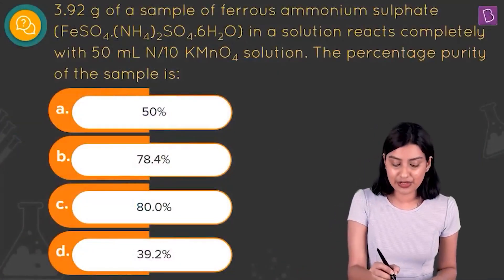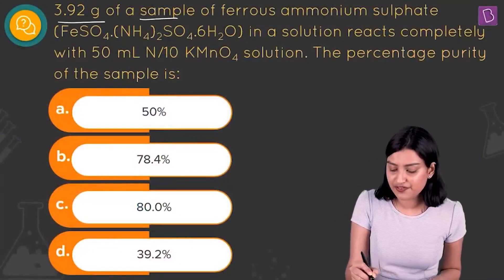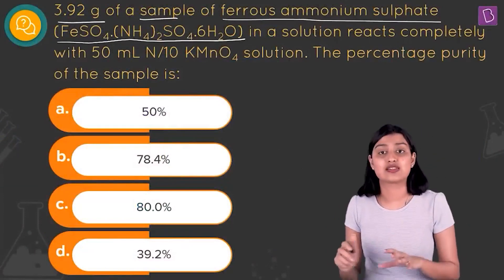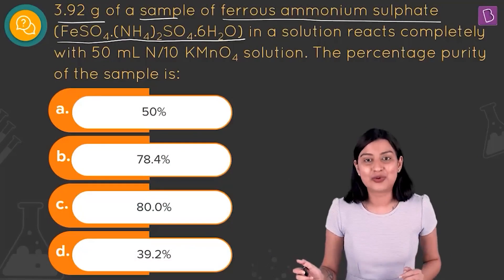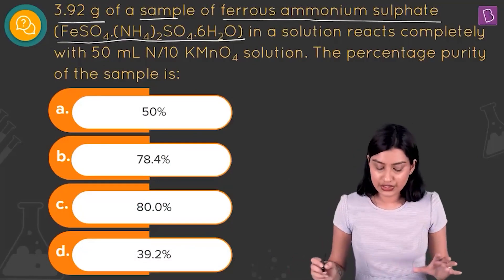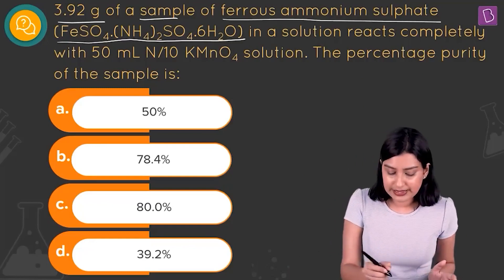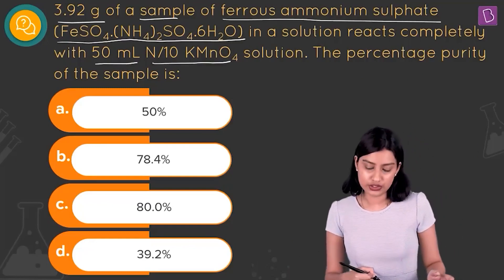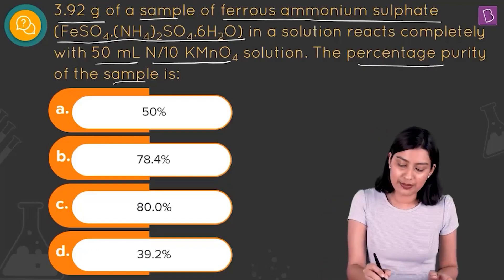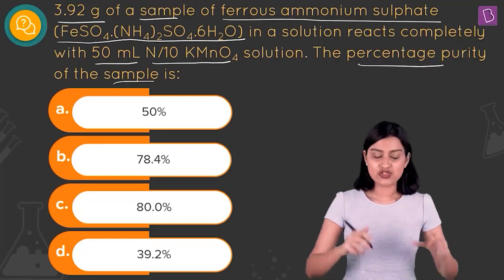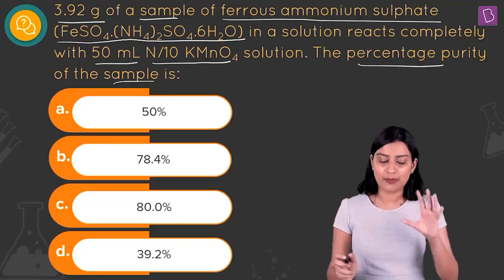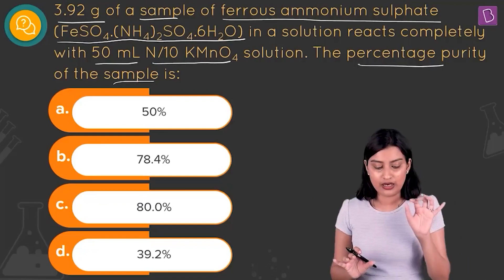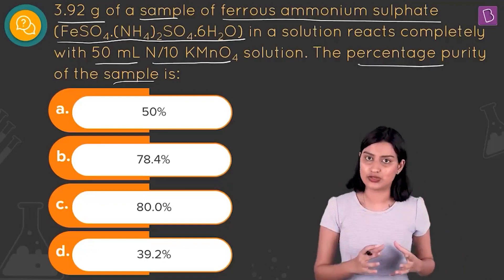Here they're saying you have 3.92 grams of a sample of ferrous ammonium sulfate — FeSO4·(NH4)2SO4·6H2O, also called Mohr's salt — in a solution which reacts completely with 50 mL of N/10 KMnO4 solution, and the percentage purity of the sample is what? The key idea is that the number of equivalents of KMnO4 used equals the number of equivalents of Mohr's salt.